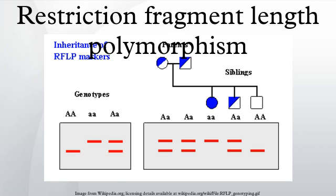A limited version of the RFLP method that used oligonucleotide probes was reported in 1985. Fortunately, the results of the Human Genome Project have largely replaced the need for RFLP mapping, and the identification of many single nucleotide polymorphisms in the project has replaced the need for RFLP disease linkage analysis. The analysis of VNTR alleles continues, but is now usually performed by polymerase chain reaction methods. For example, the standard protocols for DNA fingerprinting involve PCR analysis of panels of more than a dozen VNTRs.